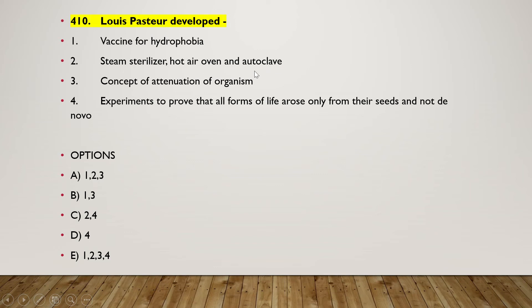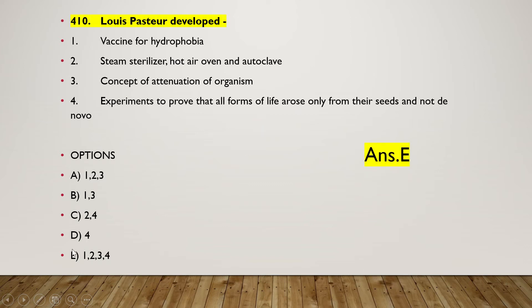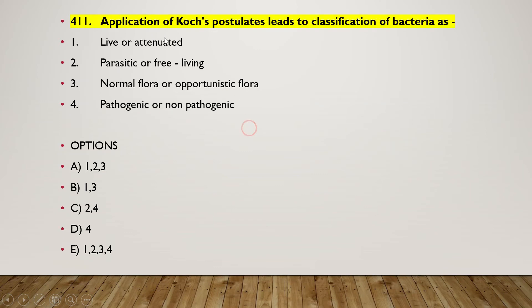Next question: Louis Pasteur — (1) developed vaccine for hydrophobia, (2) steam sterilizer, hot air oven, and autoclave, (3) concept of attenuation of organism, (4) experiments to prove that all forms of life arose only from their seeds and not de novo. The right answer is option E — one, two, three, four — all options are correct.